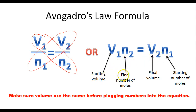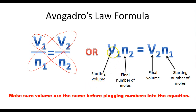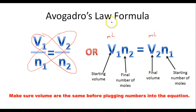In this formula, V1 is the starting volume, N2 is the final number of moles, V2 is the final volume, and N1 is the starting number of moles. When working with this equation, we need to make sure the volume units are the same — milliliters with milliliters, liters with liters. And N stands for the number of moles of gas.